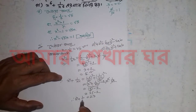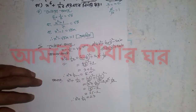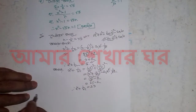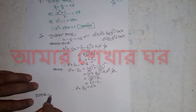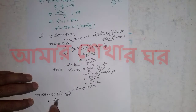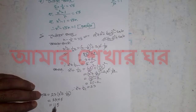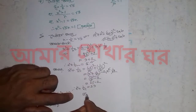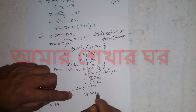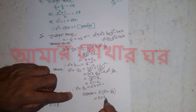x to the power 4 plus 1 by x to the power 4 is equal to — x squared plus 1 by x squared is equal to 5. So x to the power 4 plus 1 by x to the power 4: 5 times, x to the power 4 plus 1 by x to the power 4, the value is 23.